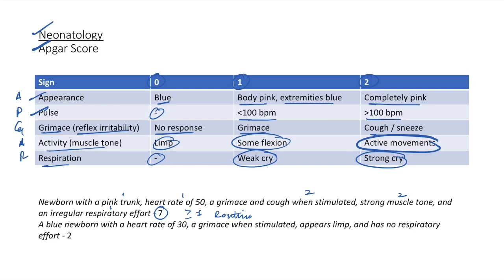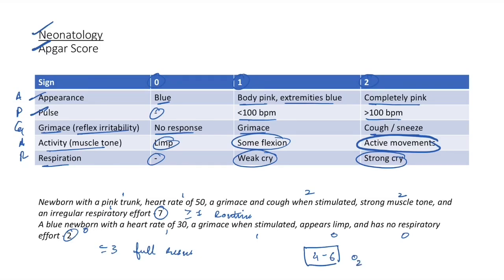Second APGAR case: blue newborn with heart rate of 30, grimace when stimulated, appears limp, and no respiratory effort — total score of 2. When APGAR ≤3, the baby requires full resuscitation. When APGAR is between 4-6, some resuscitation like suctioning and oxygen is needed.